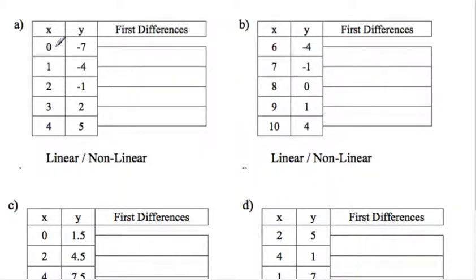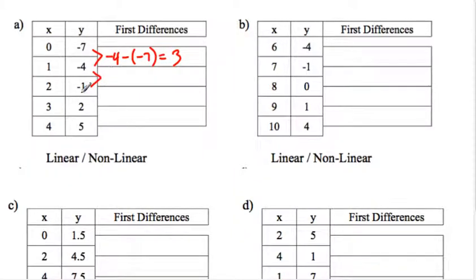For example, this one is okay because it's going up 1, up 1, up 1, up 1. So we're going to take those, and whatever the Y values are, we'll calculate the first differences. Negative 4 subtract negative 7 — that's negative 4 plus 7, that's 3. Negative 1 subtract negative 4 is 3. 2 subtract negative 1 is 3. 5 subtract 2 is 3. These were all going up by the same number — 3 every time. So these go up by the same number: it's linear.